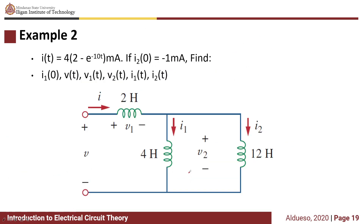For Example 2, we are given a circuit with three inductors. We are given that i(t) equals 4(2 minus e^(−10t)) milliamperes, and i2 at t=0 is equal to negative 1 milliampere. Find i1(0), v(t), v1(t), v2(t), i1(t), and i2(t).